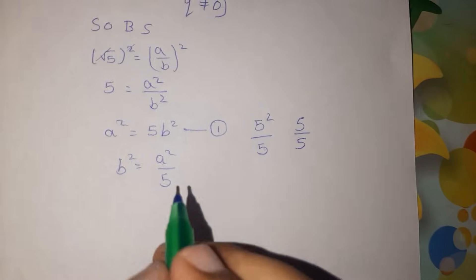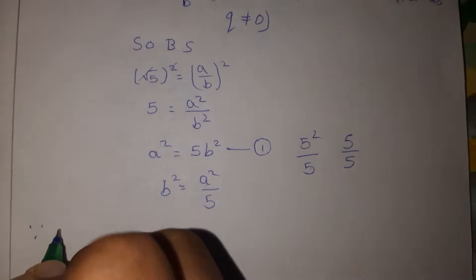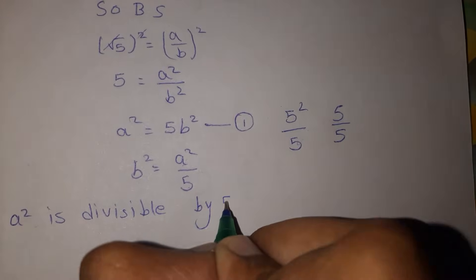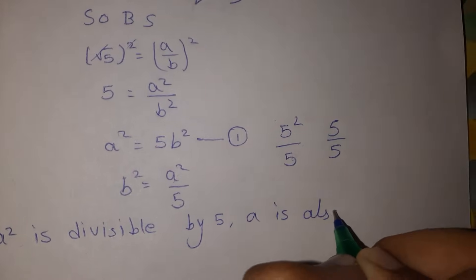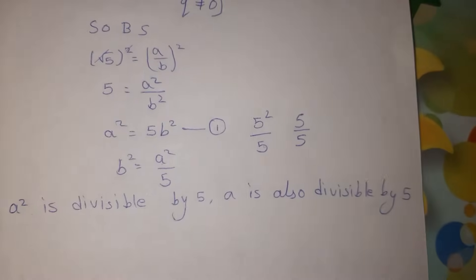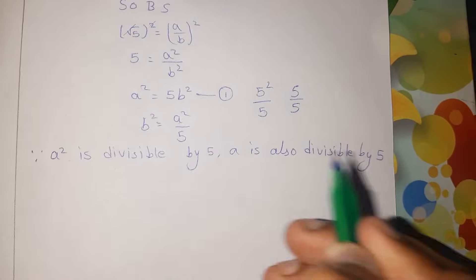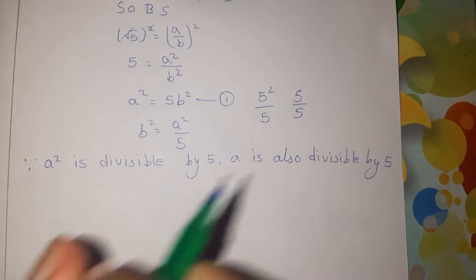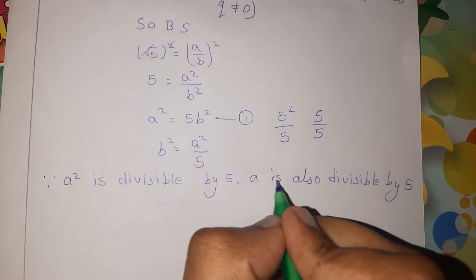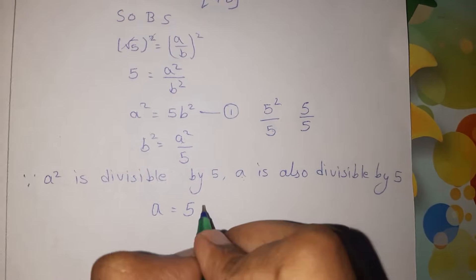Since a square is divisible by 5, a is also divisible by 5. So a can be divided by 5. This means a is divisible by 5, so a is equal to 5 into some number.